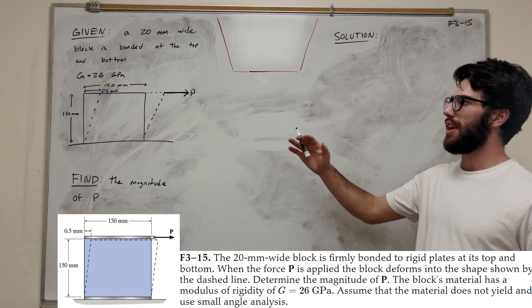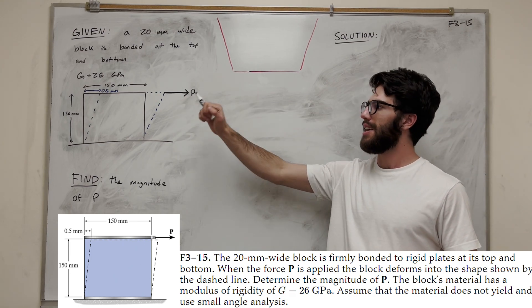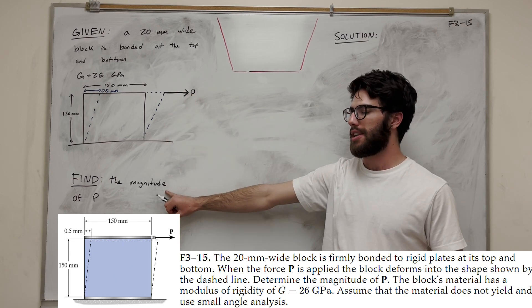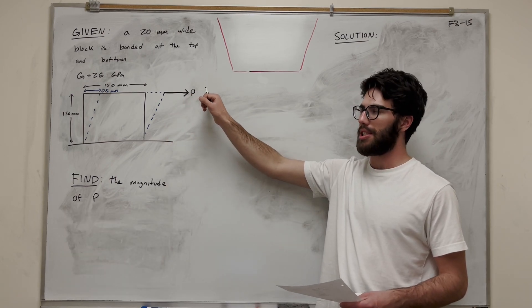We're given this 20mm wide block, and it's being pulled by P. You can see how it kind of gets deformed here at this angle. Our goal is to find the magnitude of P which allows us to pull this material like that.